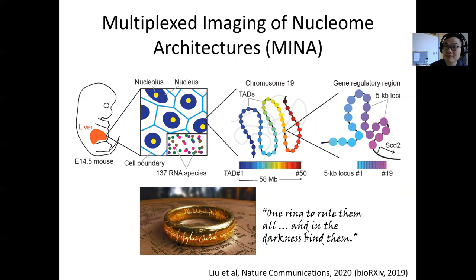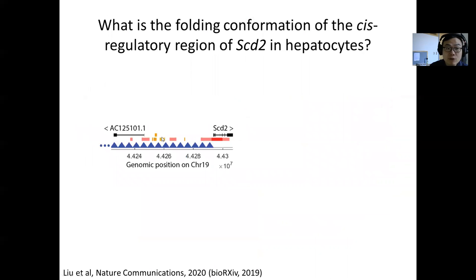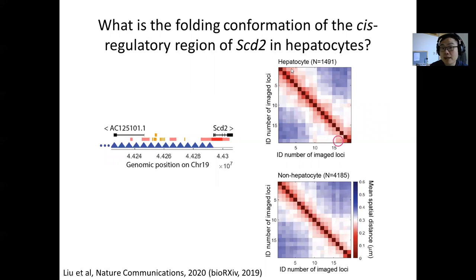We do this because we have several previously intractable questions. For example, there is an important gene called STD2 that is critical for fetal liver development. We know it is expressed in fetal liver hepatocytes, but the cis-regulatory region folding was previously unknown. Particularly, there are several enhancers marked in orange, and which one of them interacts with the STD2 promoter in fetal liver hepatocytes was unknown. With our technique, we can compare the chromatin folding organization of this region in hepatocytes versus non-hepatocytes, and identify that this specific enhancer actually interacts with the STD2 promoter in fetal liver hepatocytes — identifying cell-type specific promoter-enhancer interactions in a complex tissue.